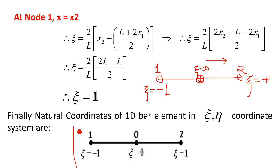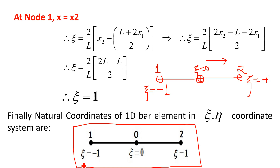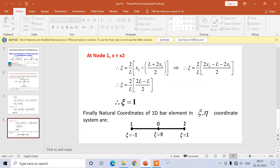These are the natural coordinates of the one-dimensional bar element in the ξη coordinate system. For reference, in the previous video on natural coordinates in the XY coordinate system, L1 = (X2 − X) / L and L2 = (X − X1) / L. I hope all of you understand these two videos on the natural coordinates of the one-dimensional bar element. Thank you very much.